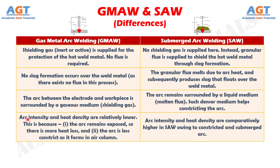Number 4: In gas metal arc welding, arc intensity and heat density are relatively lower. This is because the arc remains exposed, so there is more heat loss, and the arc is less constricted as it forms in an air column. Whereas arc intensity and heat density are comparatively higher in submerged arc welding, owing to the constricted and submerged arc.